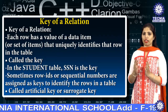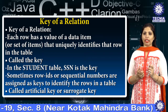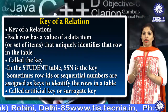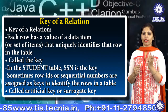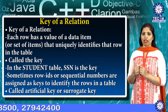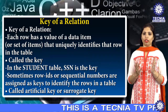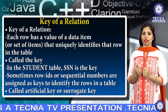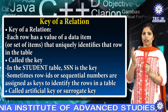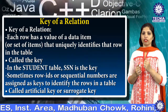Next is keys. Each row has a value of a data item that uniquely identifies that row in a table — that is called a key. In the student table, SSN is a key. Sometimes, row IDs or sequential numbers are assigned as the key to identify a row in a table, called the artificial key or the surrogate key. Each row has one or more attributes known as the relation key, which can identify the row in a relation uniquely.